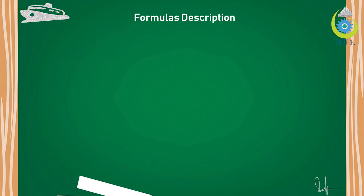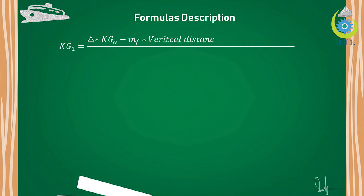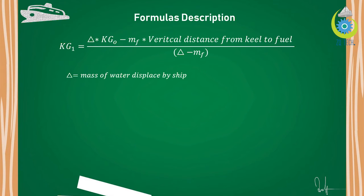Here is the formula for KG1: KG1 = (Δ × KG0 − mf × vertical distance from keel to fuel) / (Δ − mf), where Δ is the mass of water displaced by the ship and mf is the mass of fuel consumed. We multiply masses by their distances and subtract them because the fuel is consumed. If fuel is added instead, the negative sign is replaced by a positive sign. The details of this formula are given in another video on this channel.